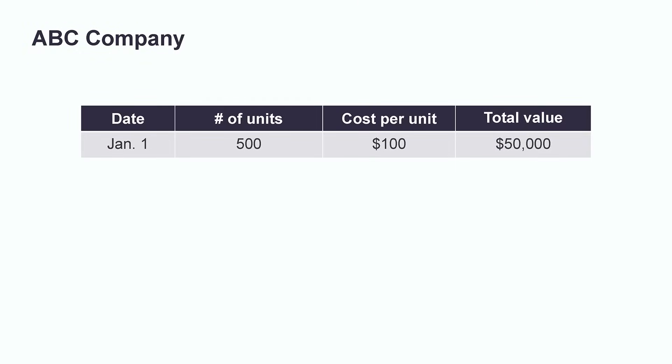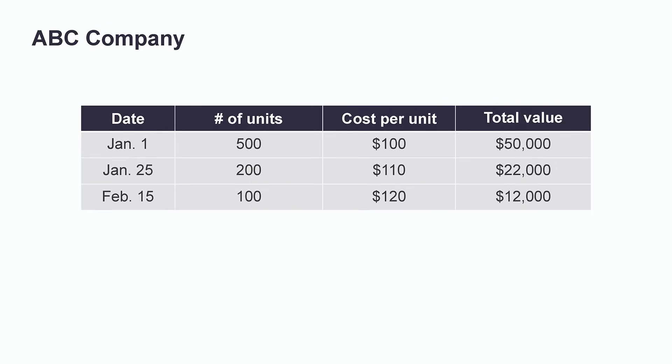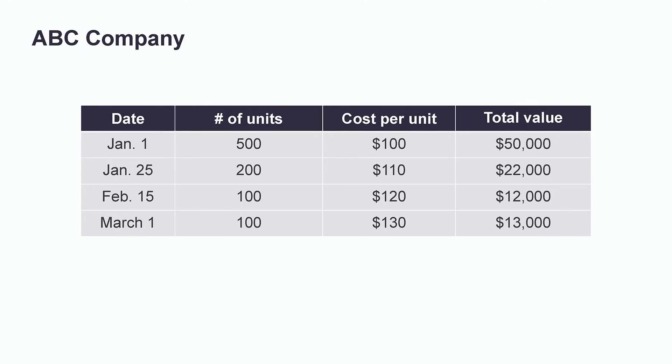Let's dive into a more detailed example of how the weighted average costing method works. At the beginning of the year on January 1st, ABC Company had a beginning inventory of 500 units at a cost of $100 per unit, for a total value of $50,000. Throughout the first quarter of the year, the company purchased more inventory at three separate times. On January 25th, they bought 200 units at $110 per unit, giving them a total of $22,000 worth of inventory for that purchase. Fast forward to February 15th, they bought 100 units at $120, and on March 1st, they bought another 100 units at $130.